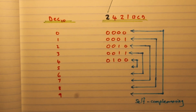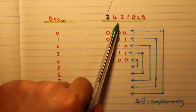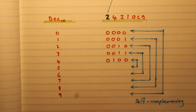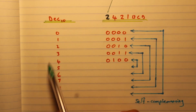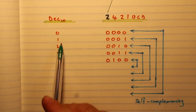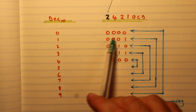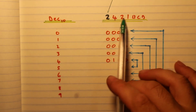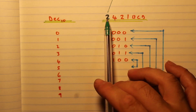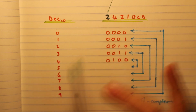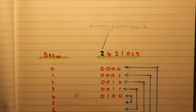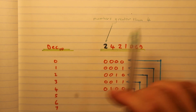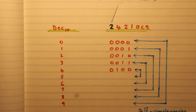The next code we're going to look at is called 2421 BCD. This is a BCD code, so there are only 10 counts — from zero to nine, we convert each digit into 2421. When you look at the code you might notice a problem: there are two twos. So when do we use the first two and when do we use the second two? There's a rule: any number greater than four has to use that second two.